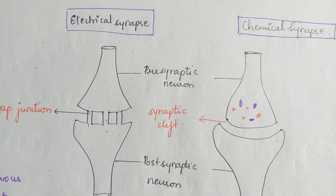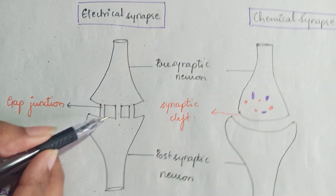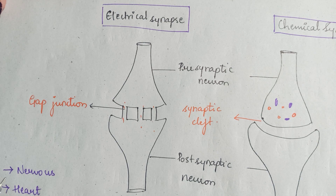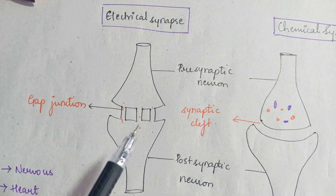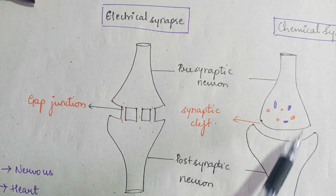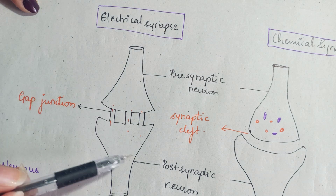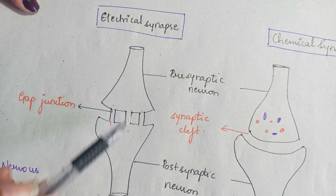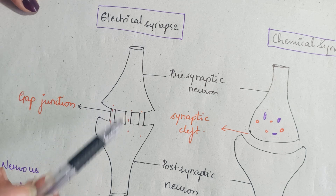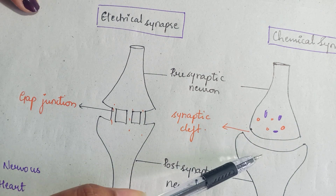In the electrical synapse, the physiological continuity between the presynaptic neuron and the post-synaptic neuron is provided by junctions called gap junctions. There is direct exchange of ions between the two neurons. In the chemical synapse, there is no such direct continuity. Due to the presence of gap junctions in electrical synapses, there is usually no delay of signals, and transmission can take place either way — whereas in chemical synapse, it is only one-way transmission.